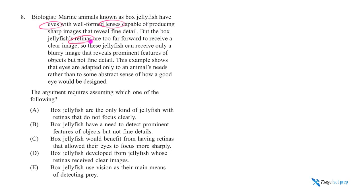But the box jellyfish's retinas, different component. But the retinas are actually way too forward to receive a clear image. So sorry lens, retina is not cooperating. So the jellyfish can receive only a blurry image that reveals prominent features of objects but not fine details. Despite the fact that lens is capable of producing fine details, retinas are not capable of receiving the fine details. So can only reveal the prominent features.